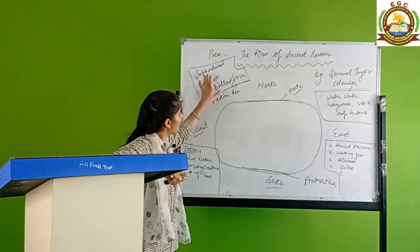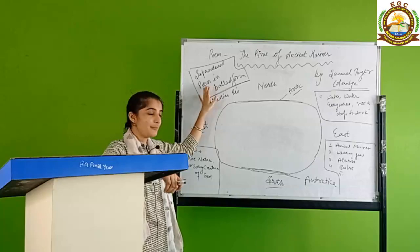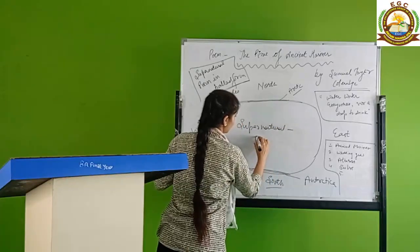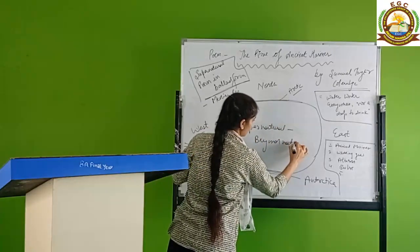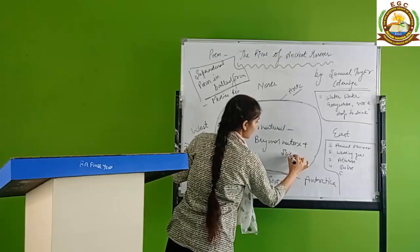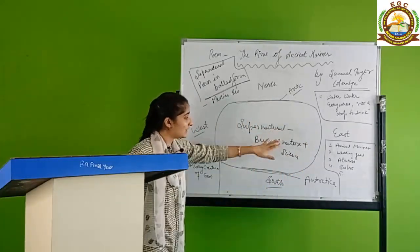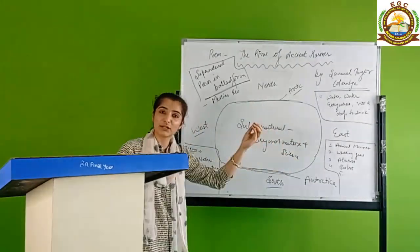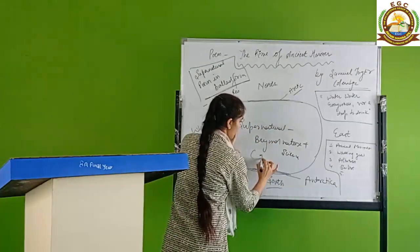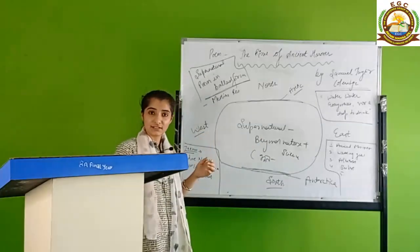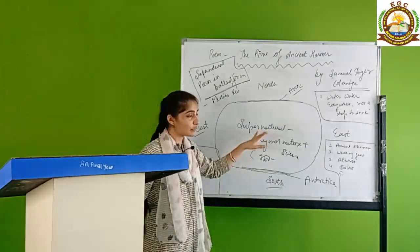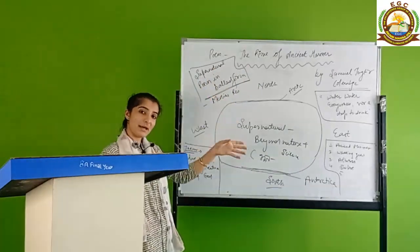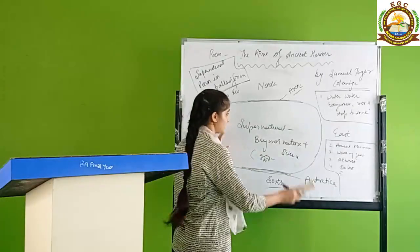It has a supernatural touch. What is supernatural? Supernatural means beyond nature and science. Things that don't exist in nature or science, like ghosts and spirits, all that stuff is called supernatural. This poem has supernatural touch, you will see supernaturalism in this poem.